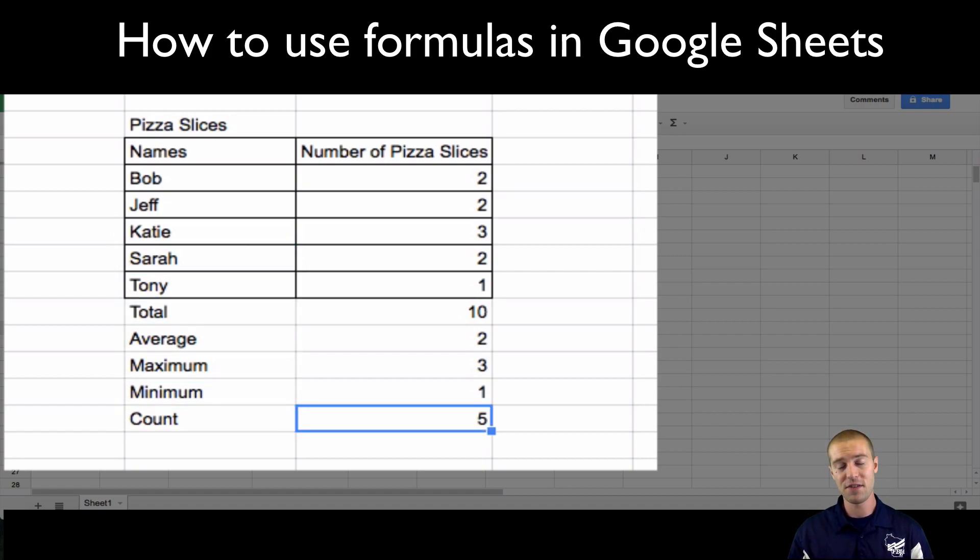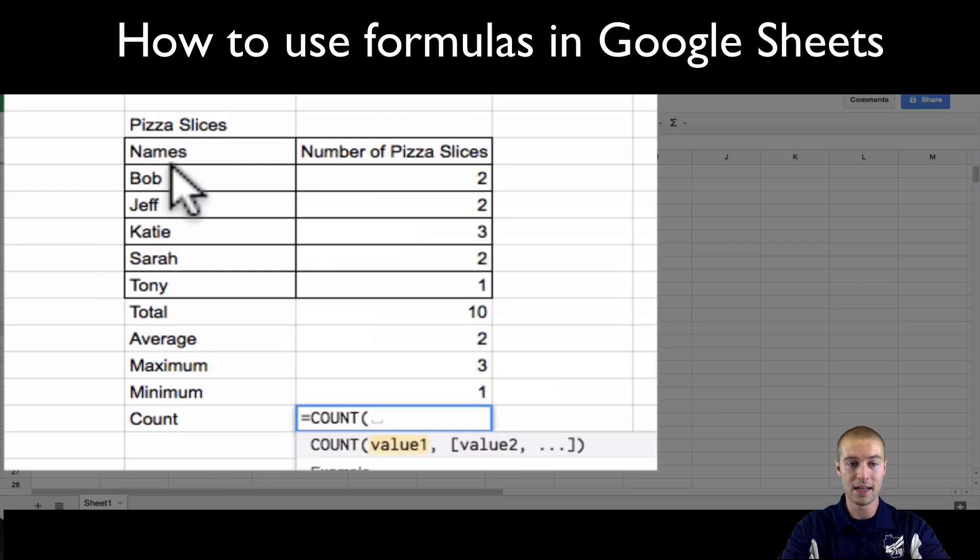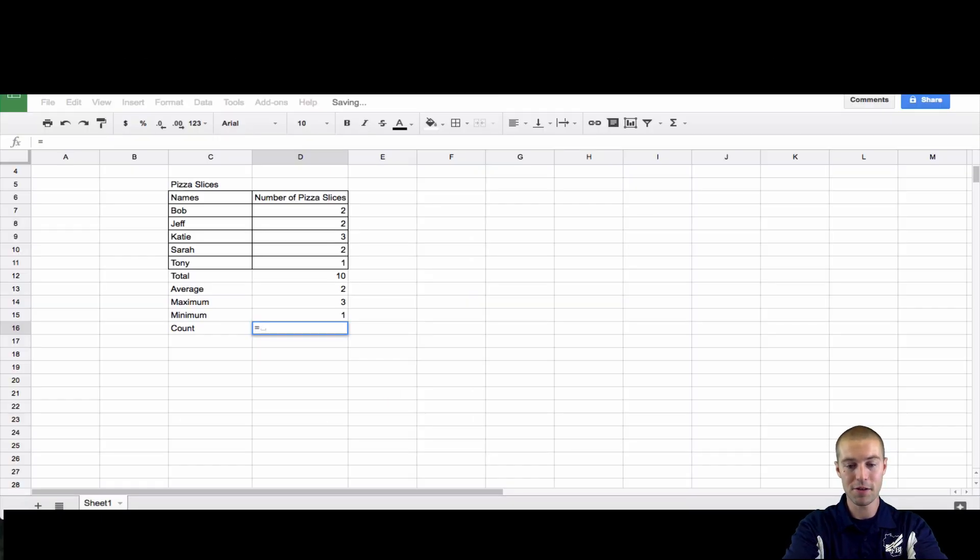So it's a little different than sum, where sum's going to count the number of pizza slices, count will count the number of people. So you can also count - like let's say we did equals count - we can count these names right here, and it's going to give you a weird value. So make sure you're counting numerical values.